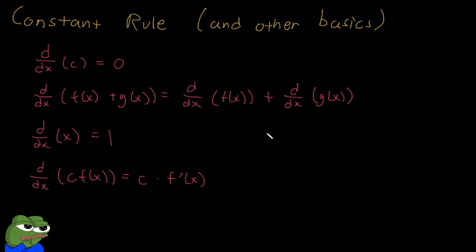Our first rule is the constant rule, but we're also going to be learning some of the other basics that you need in order to take the derivative of functions. This first line is the actual constant rule. When you take the derivative of any constant — any number that doesn't have a variable beside it — that's just zero.